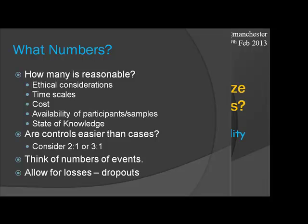What numbers are reasonable? That's the obvious first question. It's not right to say you need 5,000 people if there are only 15 in the world. So we have ethical considerations, timescales, cost, availability, and state of knowledge. A small study is much more justified if no one's done anything. If there are already lots of small studies, there's no point doing yet another one — you should be doing a much larger one.